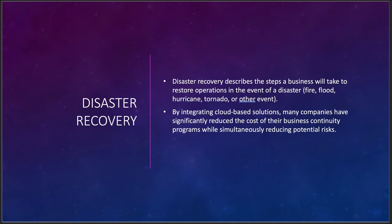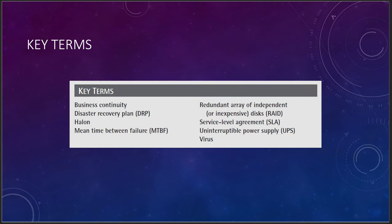Key terms: Business Continuity and Disaster Recovery plan, Halon — remember, it sucks all the oxygen out of the room — Mean Time Between Failure, Mean Time Before Failure, RAID (Redundant Array of Independent Disks), service level agreements — you will live and die by your SLAs with your cloud provider — UPS systems, and viruses. Disaster recovery and business continuity are huge in the cloud space. Understand how it works, why it works, and recognize that with IaaS it requires very intentional design.